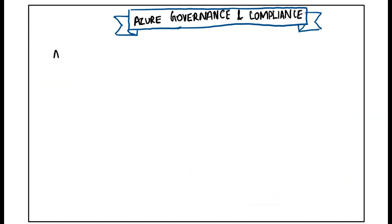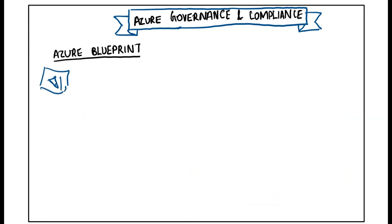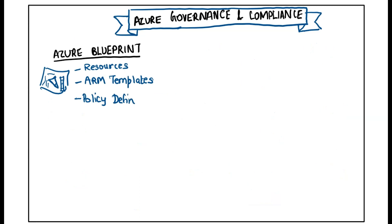The first one is Azure Blueprint. It lets you standardize cloud subscription or environment deployment. It defines repeatable settings and policies that are applied as new subscriptions are created. It includes resources, ARM templates, policy assignments, role assignments, and access control.